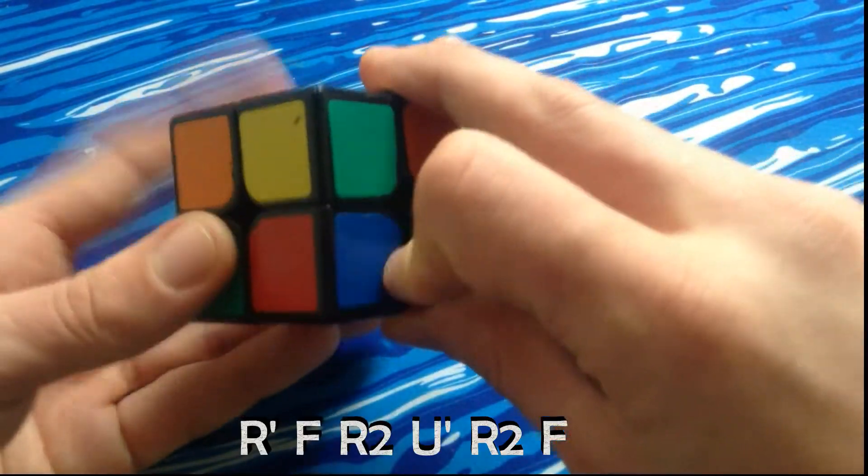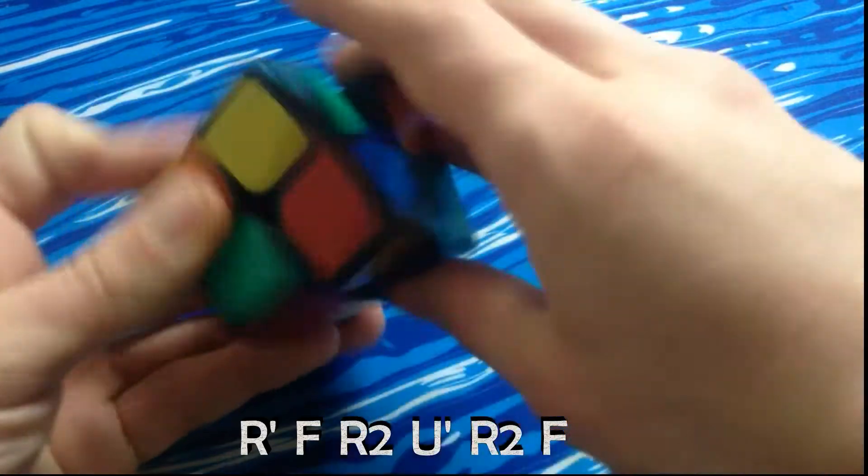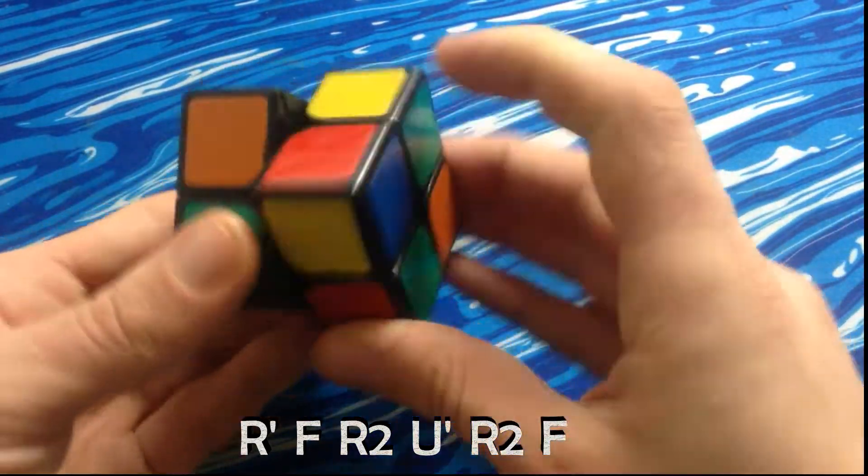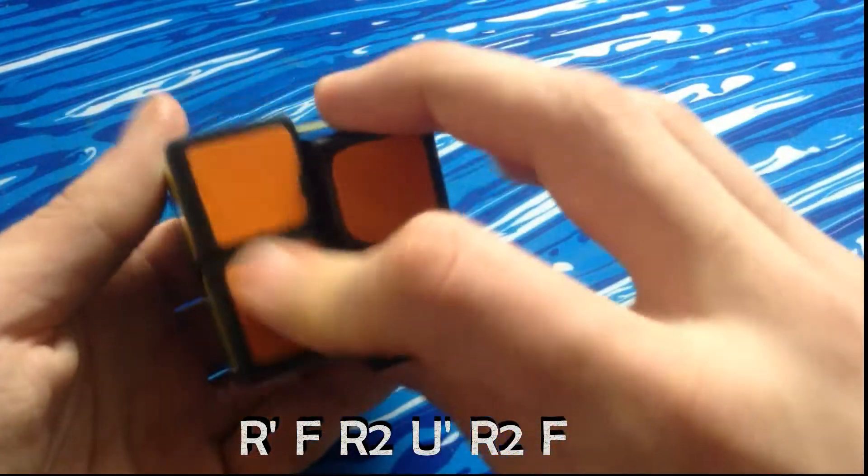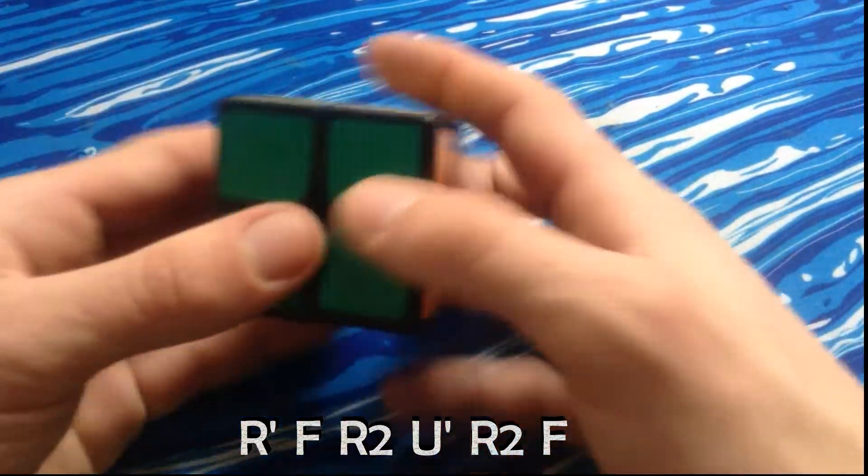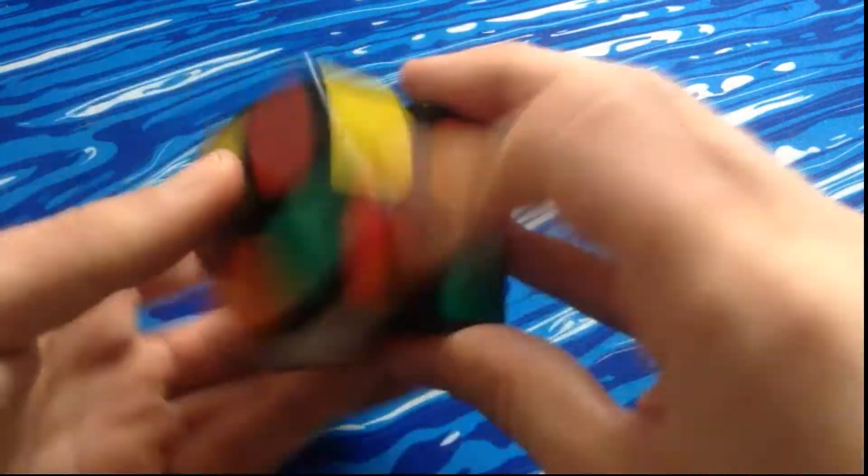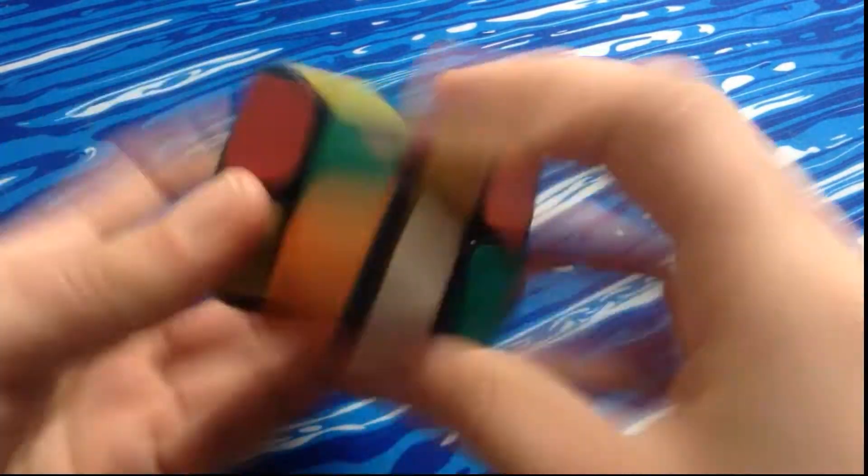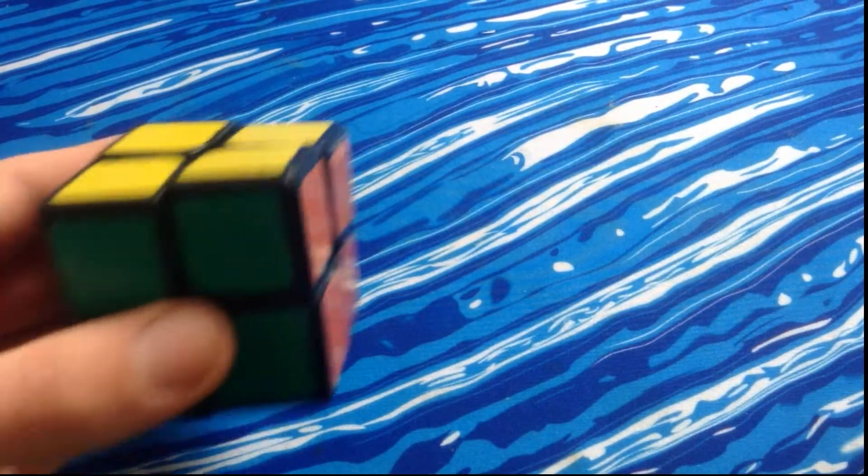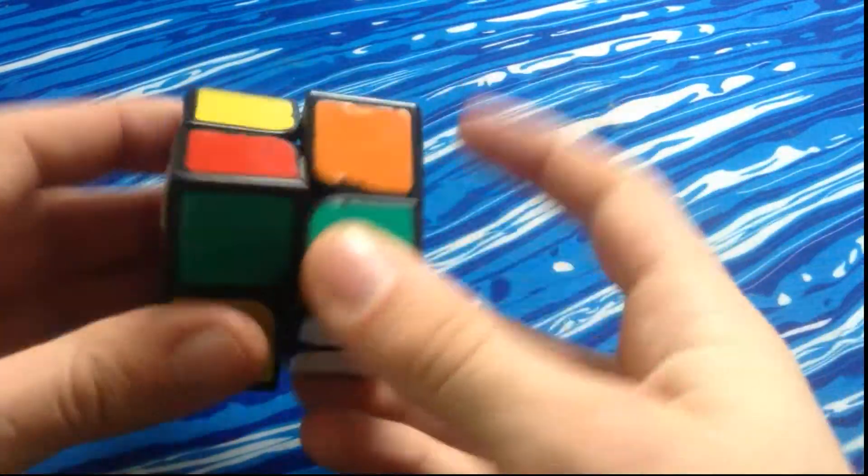So it starts with R' F R2 U' F R. So it's regripless as well, and as you can see, very quick, because you don't need to re-grip.